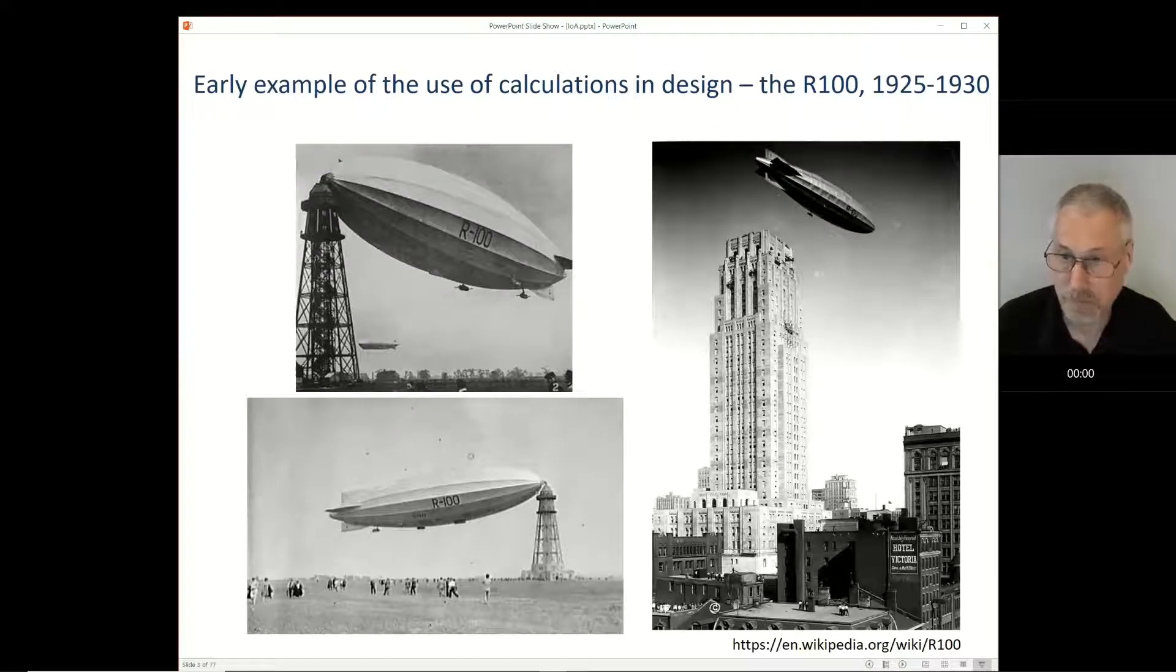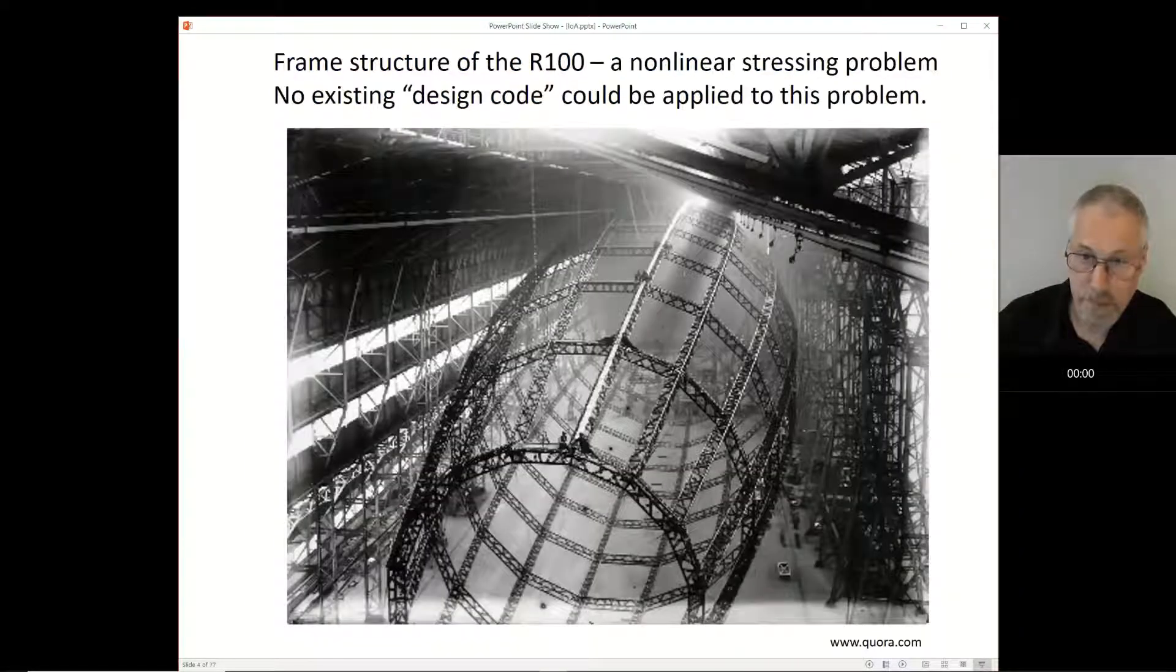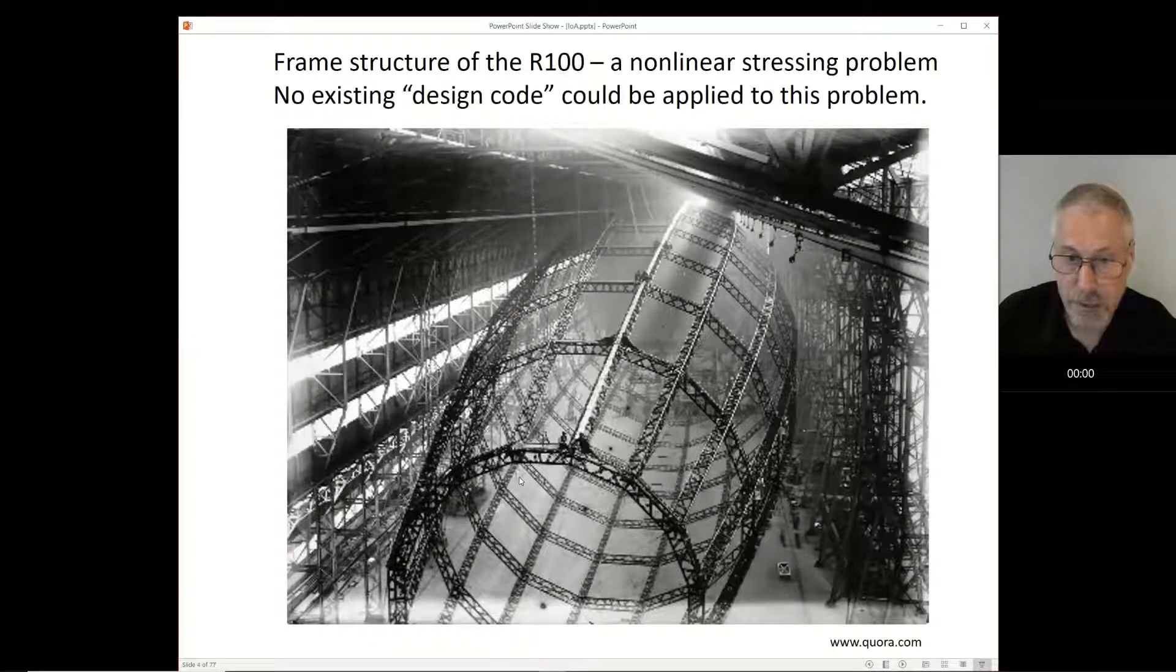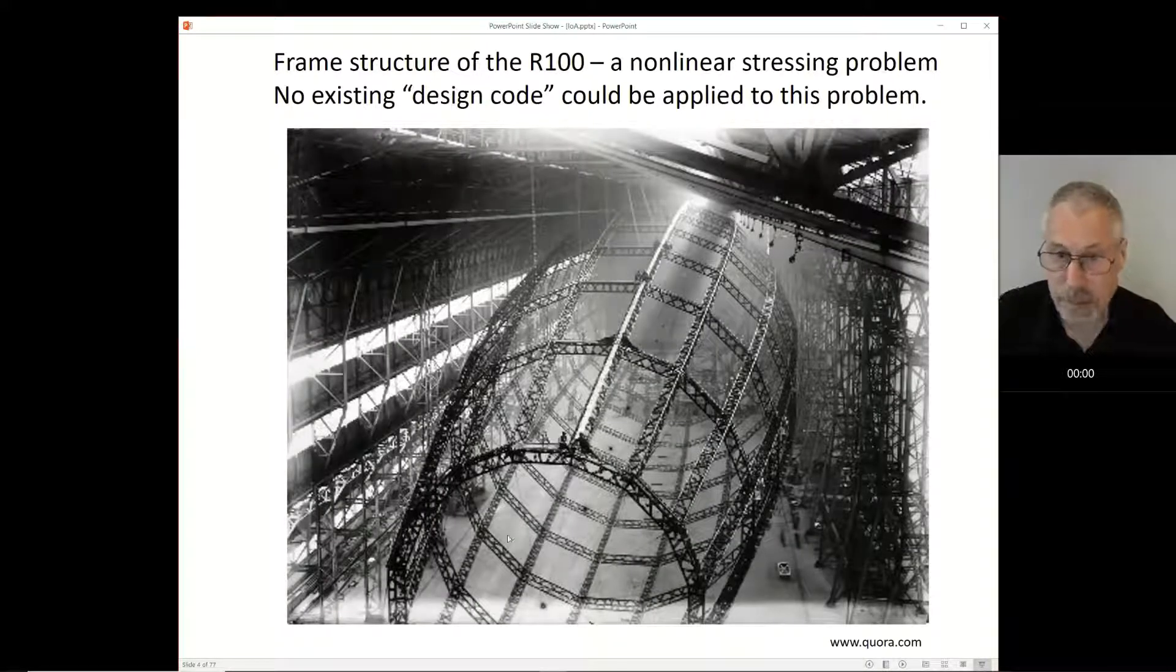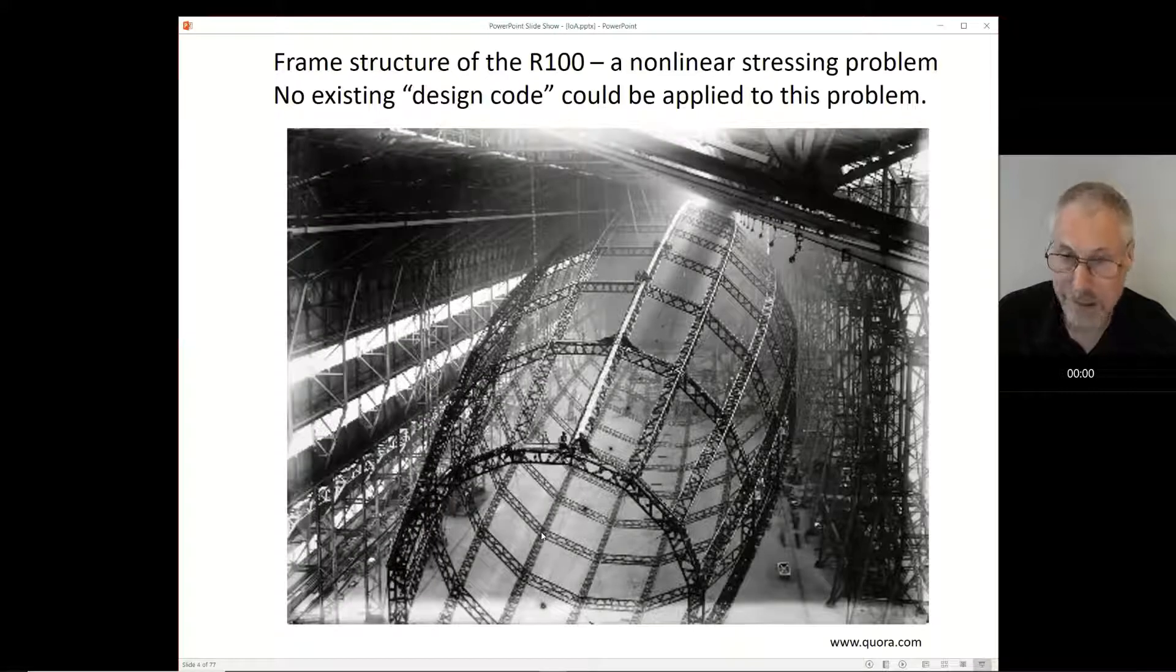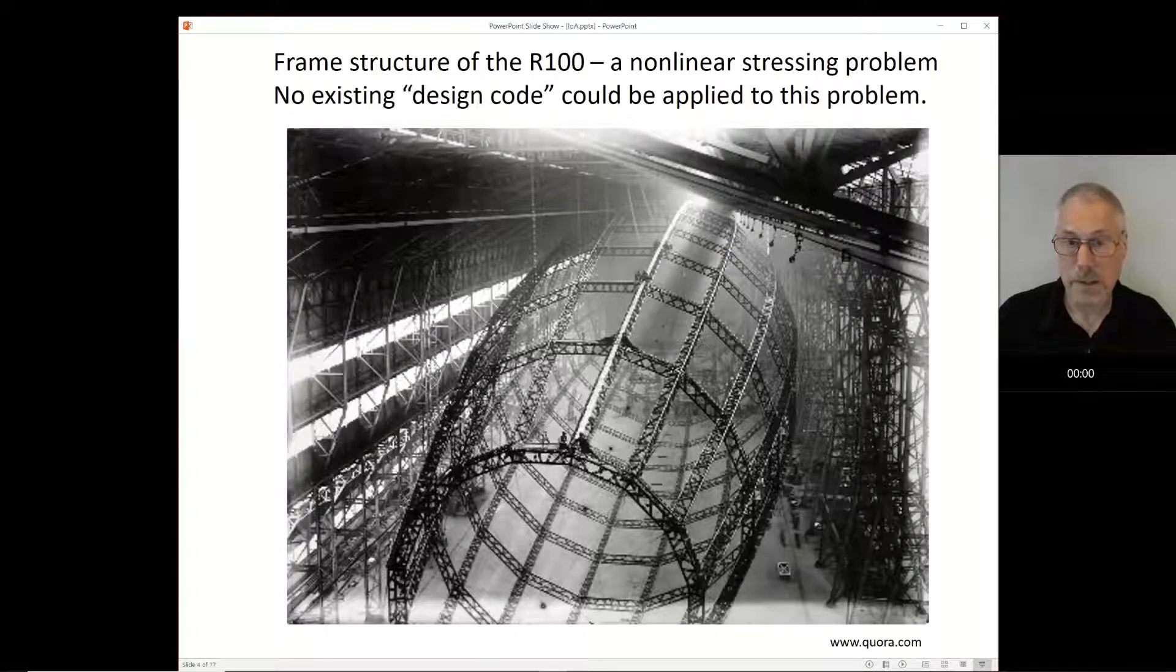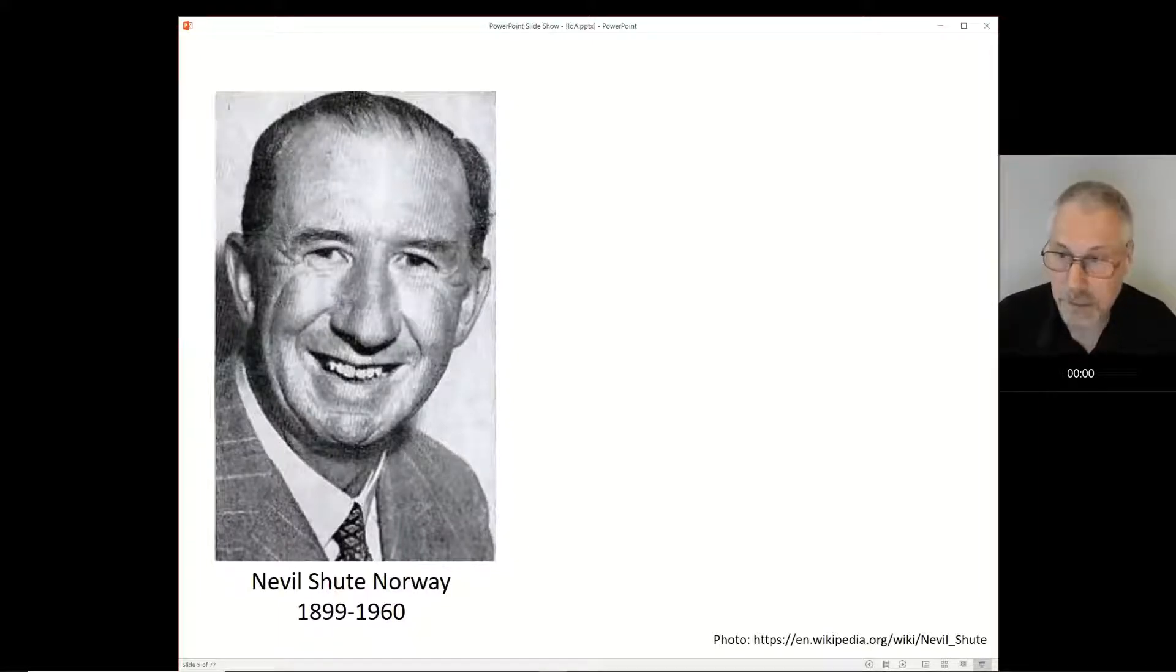The reason this is interesting is that in those days there weren't any design rules for airships, so the designers had to rely on pretty unique, bespoke calculations to see if the airship would be safe. They had to design the airframe to withstand the flight loads on the system. What makes this quite a difficult structure is if you look carefully you can see some wires here, tensioned wires to stabilize the structure. Under certain loading conditions some of these wires would go slack, which means it's essentially a non-linear structure.